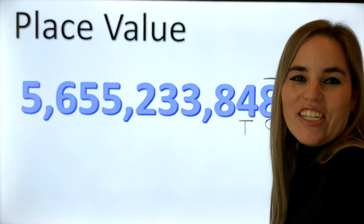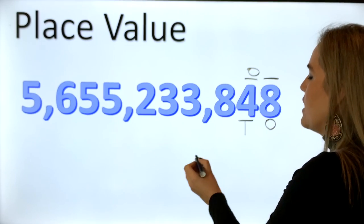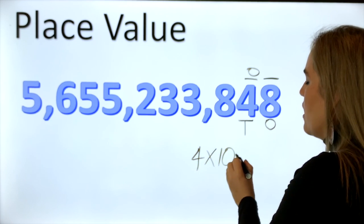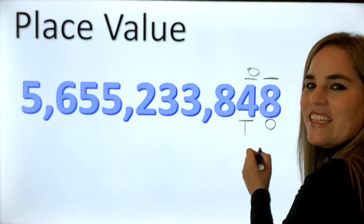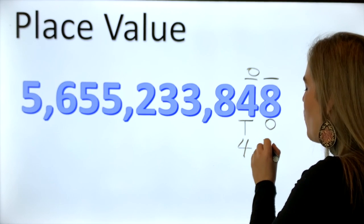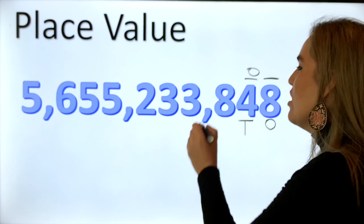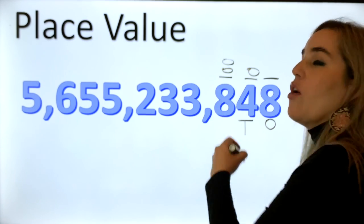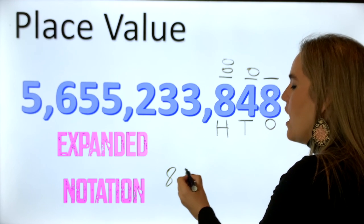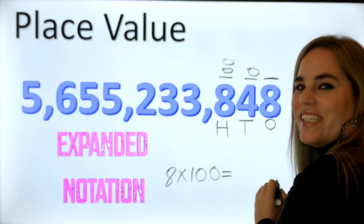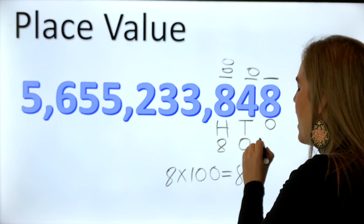Next number — these are the tens. The tens are worth ten, which means we have four groups of ten, and four times ten equals 40. The value of this four is 40 — yes, if you said 40, you are on the right track! Let's move on to the hundreds. The hundreds are groups of hundreds, so you count one hundred, two hundred, three hundred, and on and on. This eight is eight groups of hundreds, and eight times one hundred is eight hundred. Therefore, the place value of this eight is eight hundred.